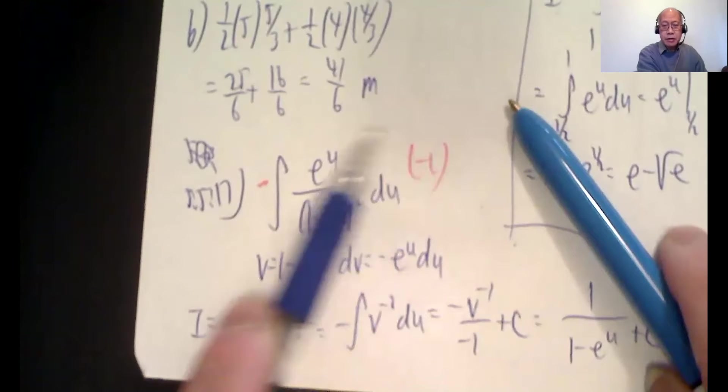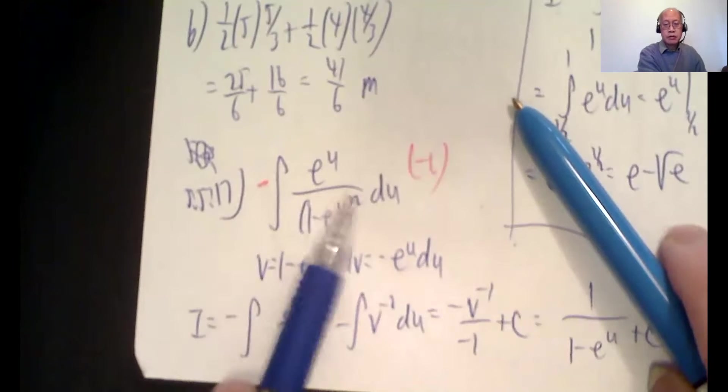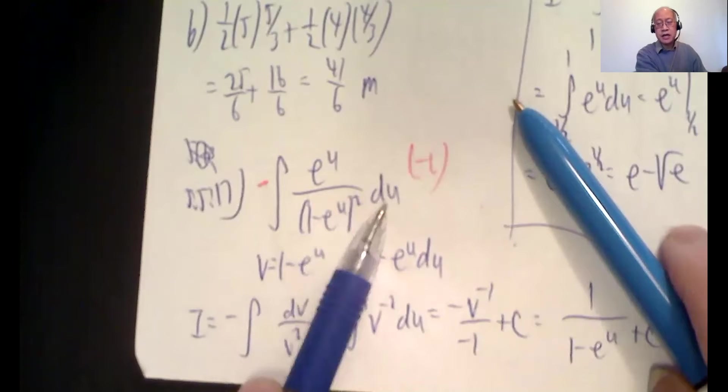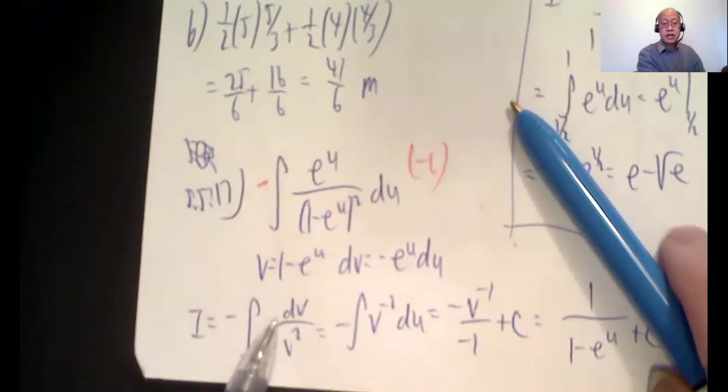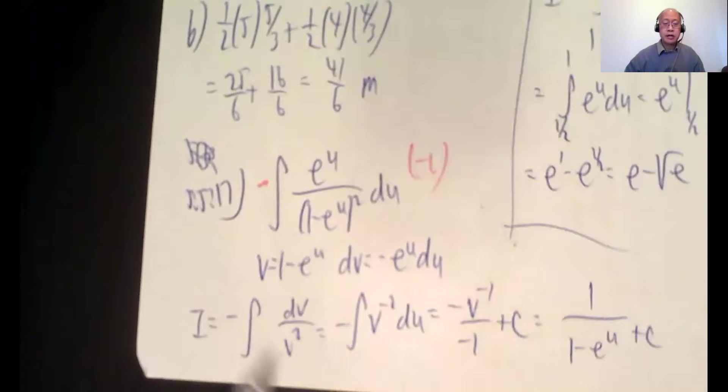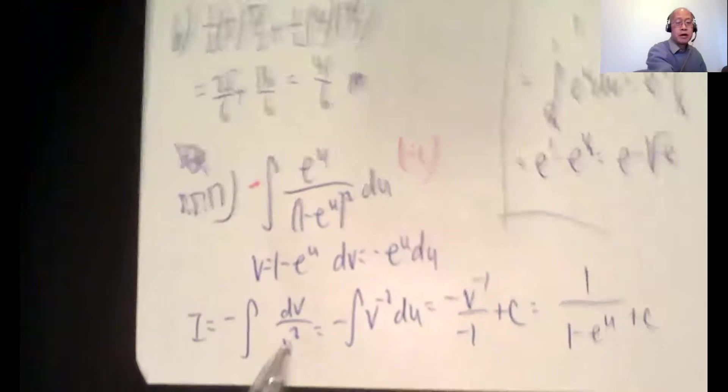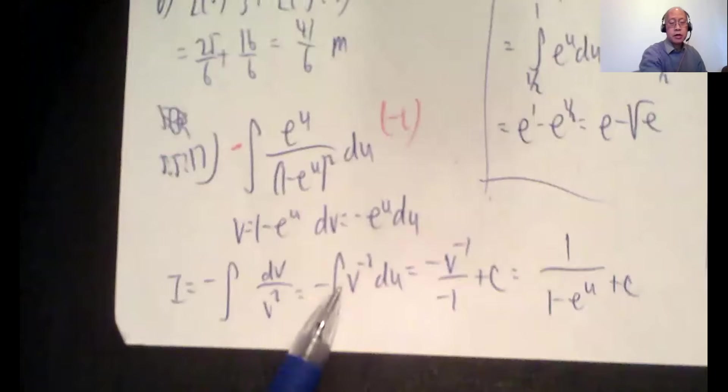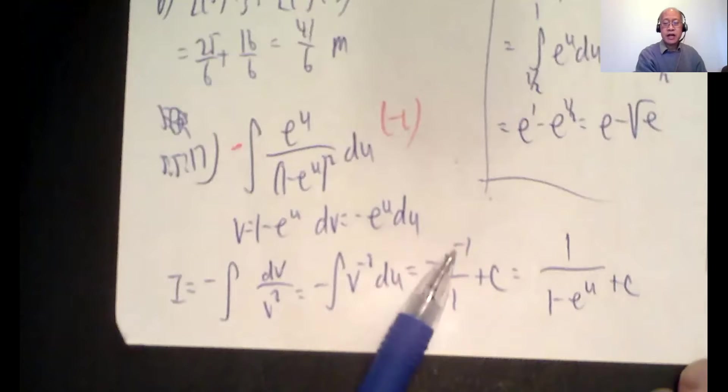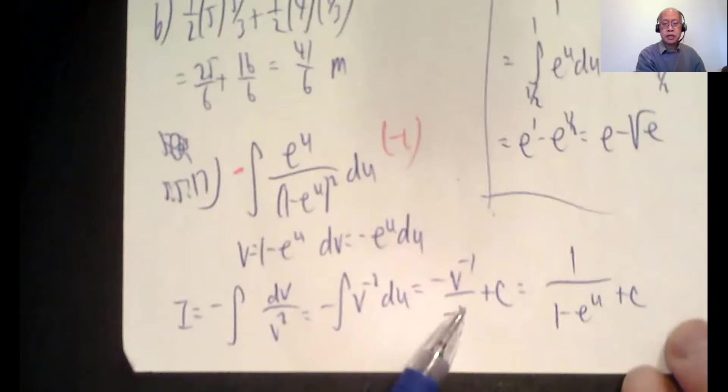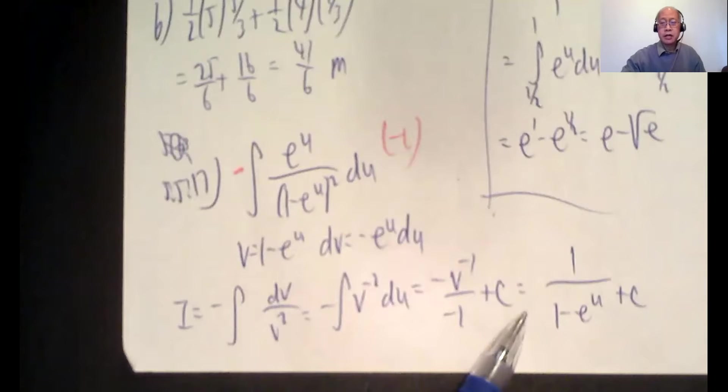So now this top, negative one, e to the u du. Remember, when I write du like that off to the side, it's like it's in a numerator. That's dv. v and 1 minus e to the u is v squared with a negative outside. And v squared on the bottom means v to the negative 2 on top. So negative v to the negative 1 over negative 1 plus c. The negatives cancel out. v to negative 1 means 1 over v. But what was v? 1 minus e to the u. So final answer, 1 over 1 minus e to the u plus a constant.